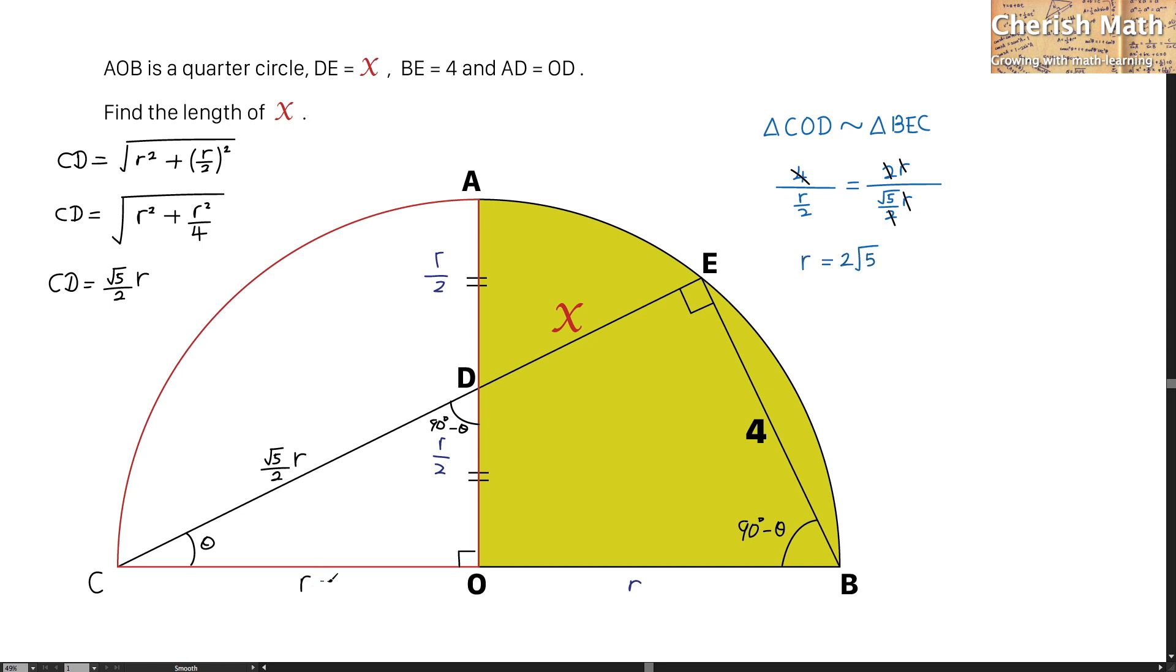By substituting the value into R, I'm going to get for this part 2 times the square root of 5. And it is applied for this part as well. While for the length of CD, this is going to be 5.